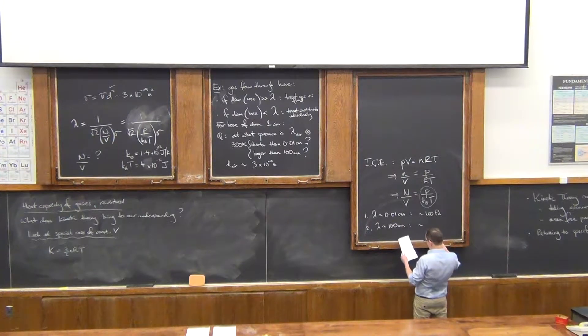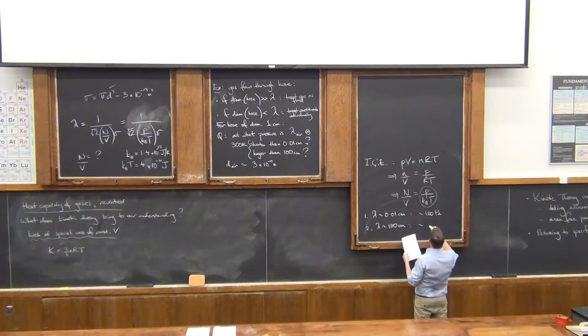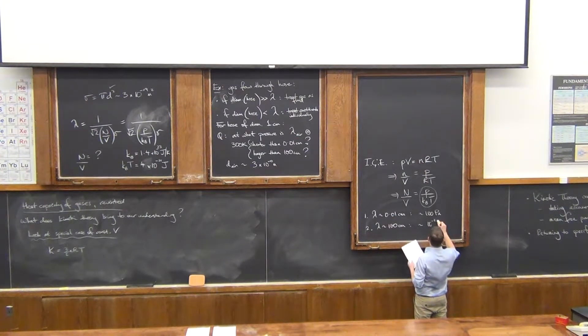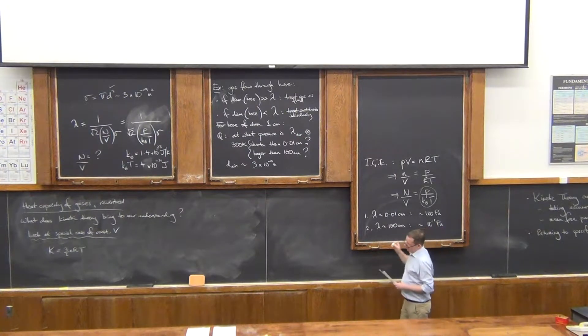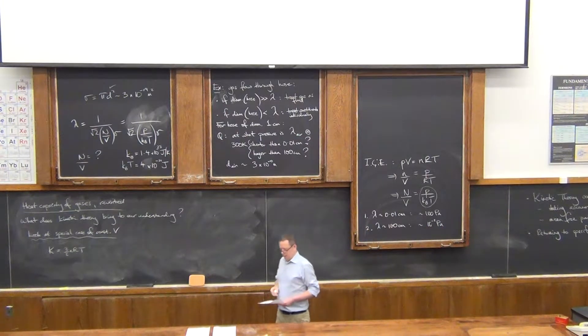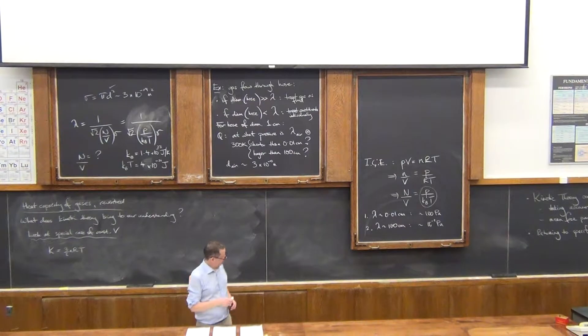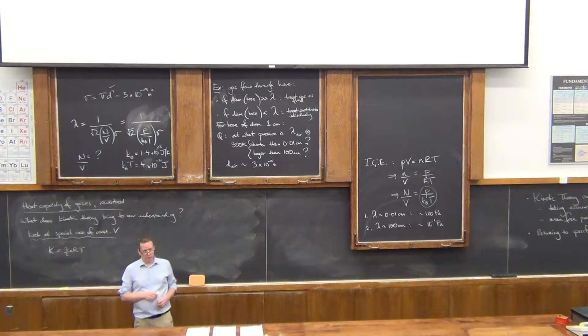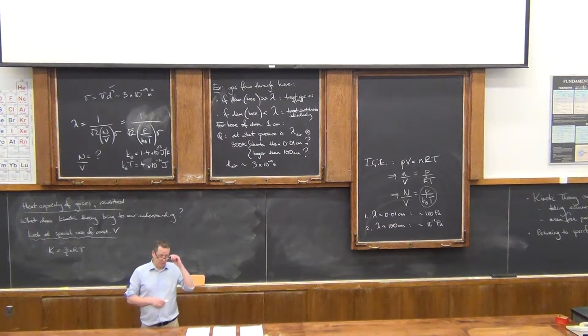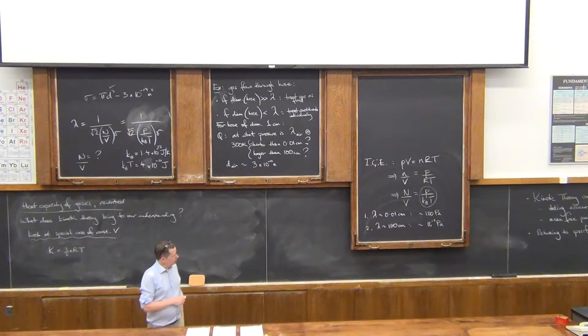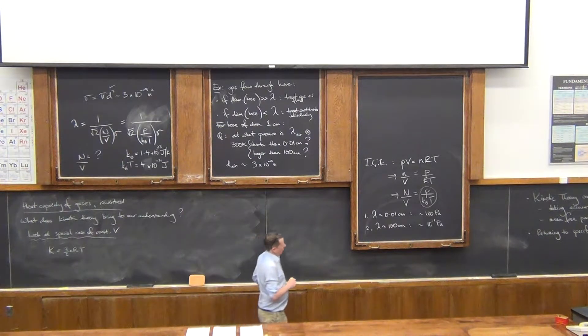And for the long mean-free-path case. No big surprise. Yes, exactly. Right. So it's around, what is this, around 10 to the minus two Pascals. Okay. That result may be not so useful, but what I think is good just to get a sense of is pressure versus mean free path dependencies. Okay. So a simple way of exploring that. Good.